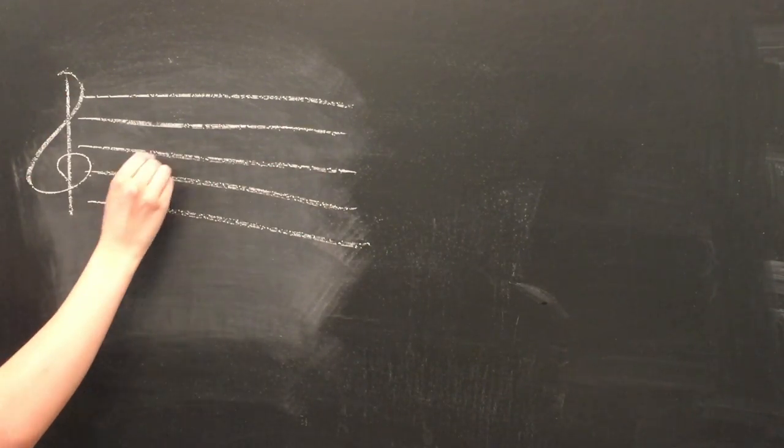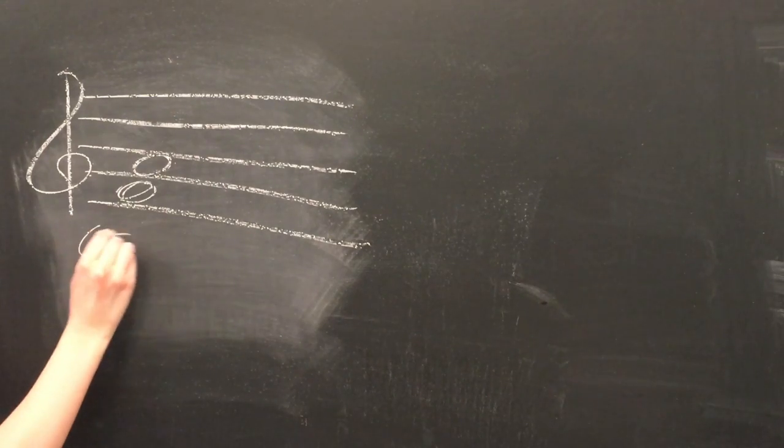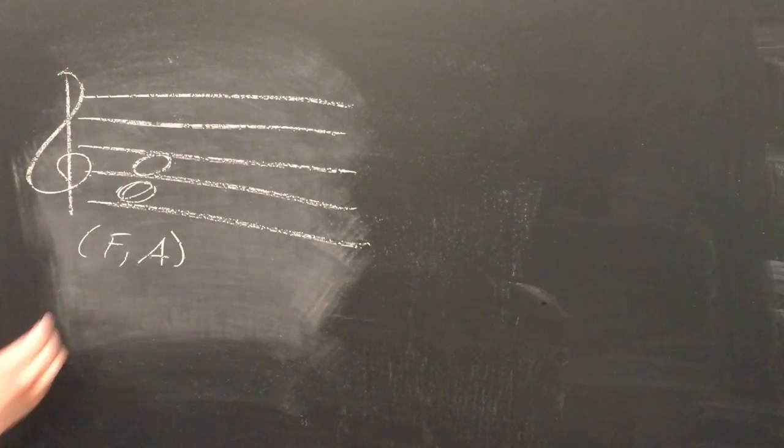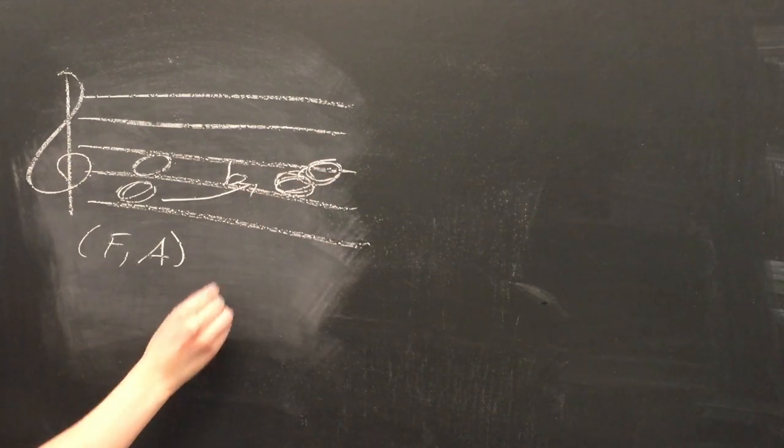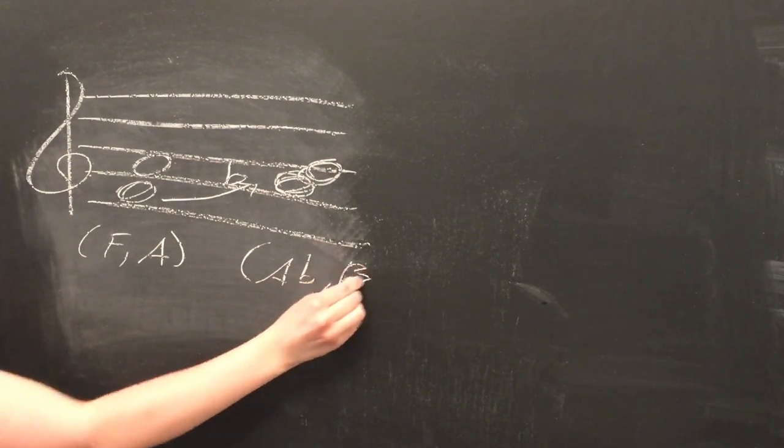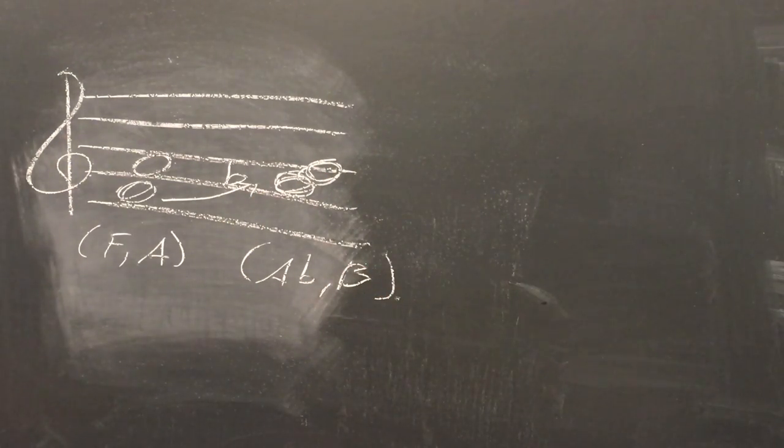Imagine you start with a two-note chord, an F and an A. You can represent this chord as an ordered pair, F, A. Now if the F moves to A-flat and the A moves to B, our ordered pair changes to A-flat, B. If we wanted to, we could represent this motion as a line segment in Euclidean space.